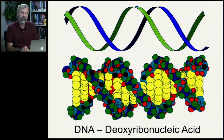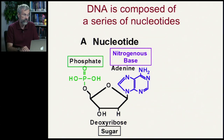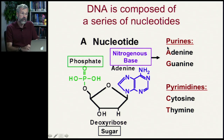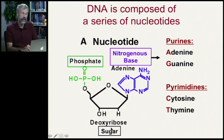The molecule of inheritance is deoxyribonucleic acid, mostly known through its initials DNA. It's a double-stranded molecule of very interesting and precise chemical characteristics. DNA is composed of a sequence of nucleotides, and each individual nucleotide consists of a phosphate, a sugar, and a nitrogenous base. These nitrogenous bases are the key parts of the molecule — these are the things that we're going to keep track of.